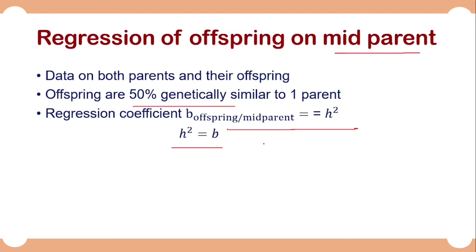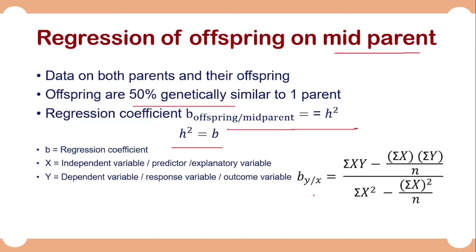To estimate heritability using regression of offspring on midparent, we first calculate the regression coefficient between offspring and midparent value. We use the machine method formula: regression of y on x equals the sum of xy minus (sum of x times sum of y divided by n), all divided by sum of x² minus (sum of x)² divided by n. Here b is the regression coefficient, x is the independent variable (midparent, also called predictor), and y is the dependent variable (offspring, also called response variable).